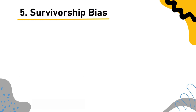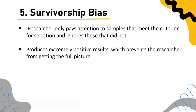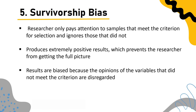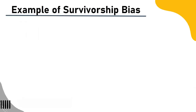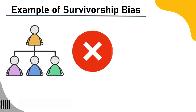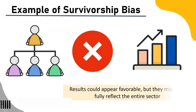Survivorship bias: In survivorship bias, the researcher only pays attention to samples that meet the criterion for selection and ignores those that did not. This produces extremely positive results, preventing the researcher from getting the full picture, since the opinions of variables that did not meet the criterion are disregarded. Example: Organizations that have failed and no longer exist may not be considered when analyzing business success in a particular industry, making results appear favorable but not fully reflecting the entire sector.